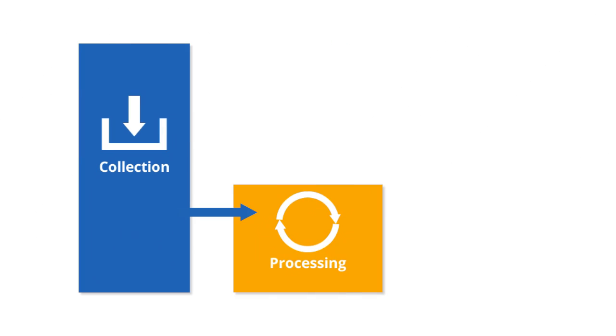You can think of processing as the transformation step that turns your raw data to something more useful. For example, during data processing, we categorize your users' devices as mobile or non-mobile.